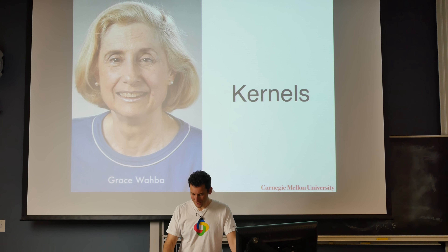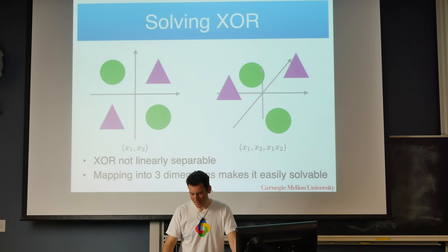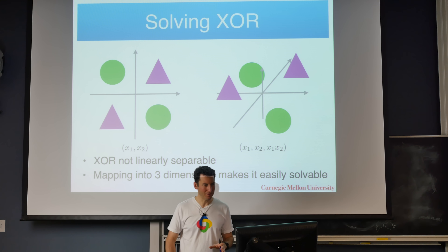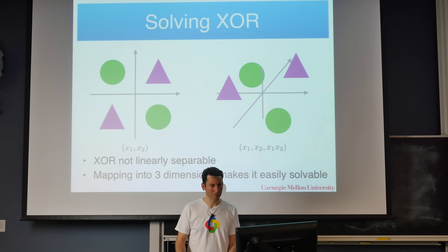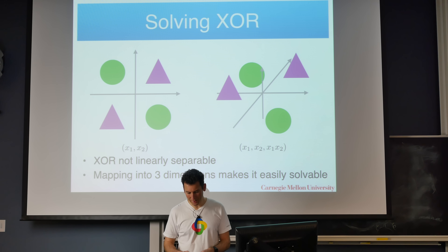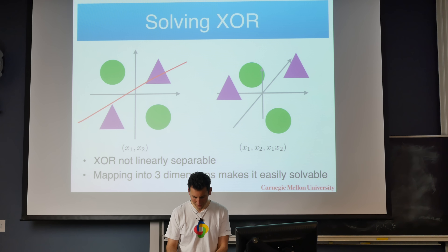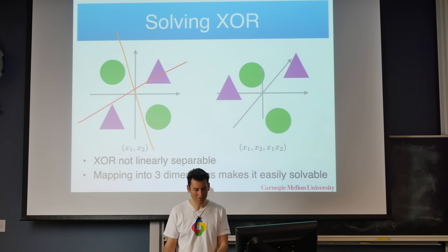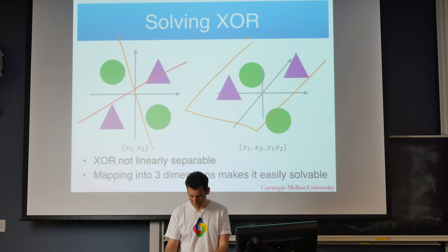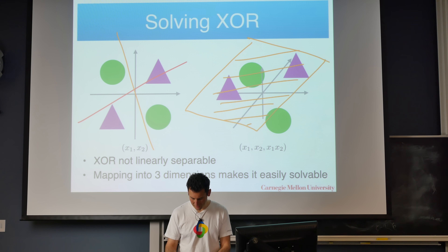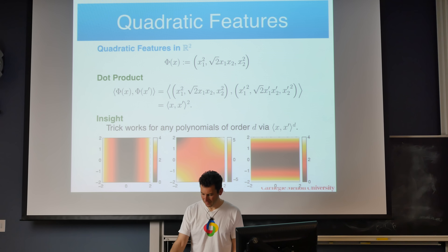Let's briefly recap what we did last Wednesday. The issue was that if you want to solve XOR, any linear separator isn't really going to do a good job — it will always get one wrong. You can't win. But if you move to a high-dimensional space, you can find a separating hyperplane that neatly separates the purple triangles from the green circles.